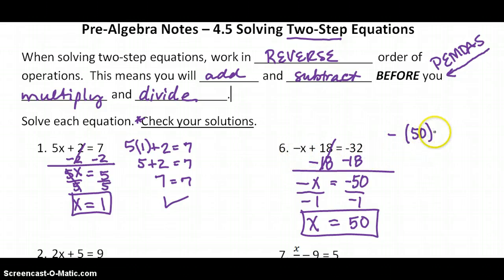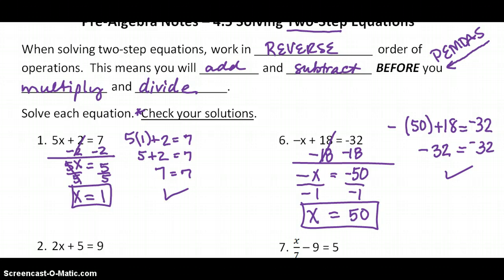So I'll plug in 50 for x. It's a negative 50 plus 18. Does that equal negative 32? Well, remember way back, we talked about integers. When you have opposite signs, you subtract and keep the sign of the larger value. And so 50 is bigger than 18 and 50 is negative. So our answer is going to be negative. And you can check it with your calculator or you can do the arithmetic and find out that negative 32 is equal to negative 32. Ka-ching! We've got that one correct.